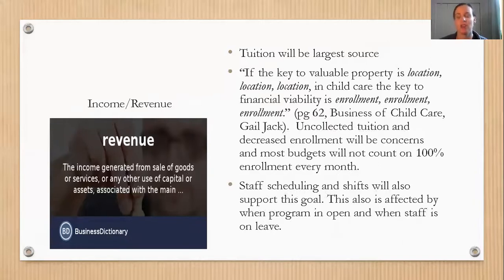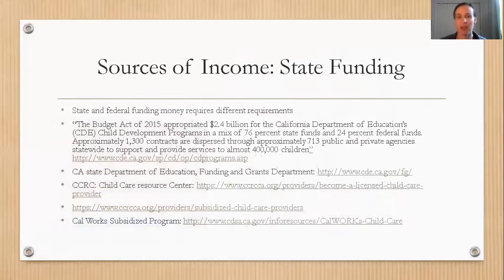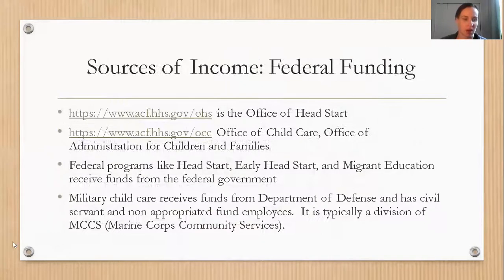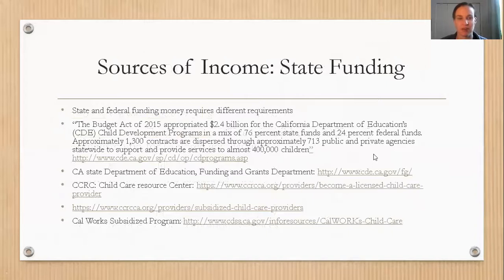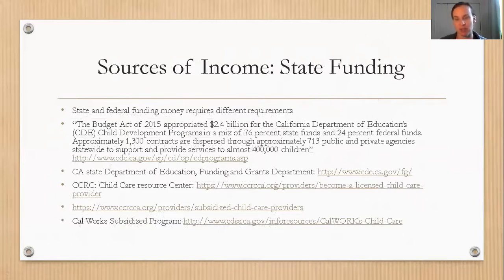I would plan on about 15 percent fewer enrolled than capacity — a couple of spaces per classroom you're not depending on — and that changes how you schedule staff, set up shifts, and manage pay. Some of you come from state-funded or federally funded programs like Head Start or California Department of Education schools, which provide substantial and more consistent income sources tied to eligibility.